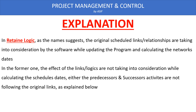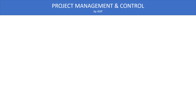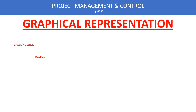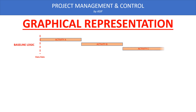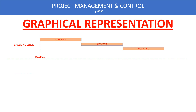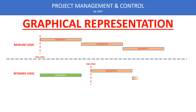To explain this through a graphical representation: suppose our baseline program has three activities — Activity A, Activity B, and Activity C — linked finish-to-start with each other. When we are updating the program and Activity B is completed, but Activity A is delayed, this delay in Activity A will carry through to Activity C via Activity B.